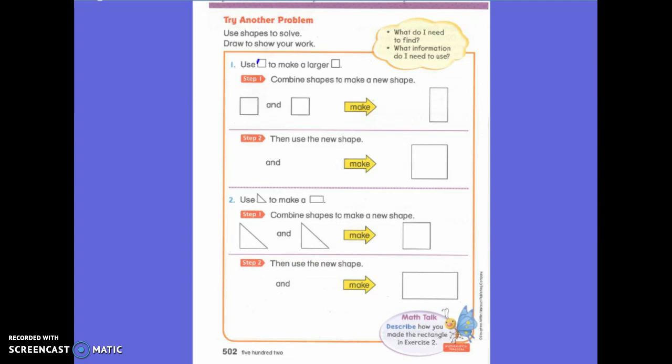We're going to use a square to make a larger square. I already have a square, but now I want to make a bigger one. So I'm going to put these two together and it's going to make a rectangle. But where are my two squares? They're inside of it. So where am I going to draw my line?